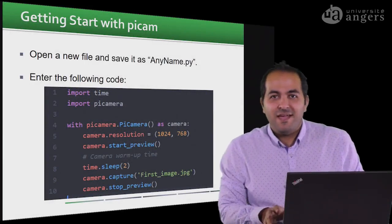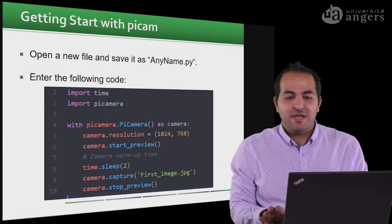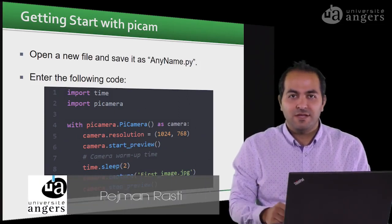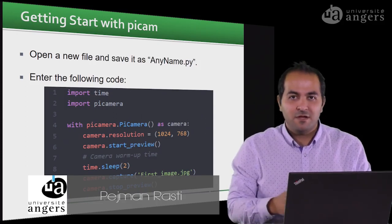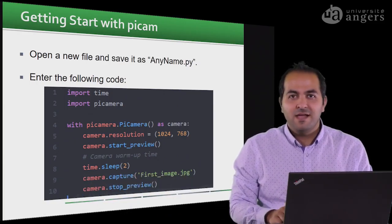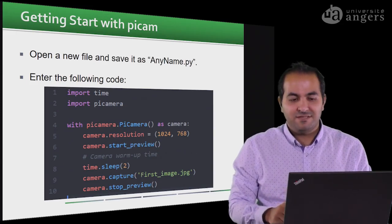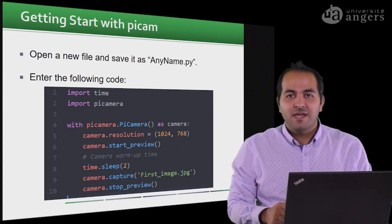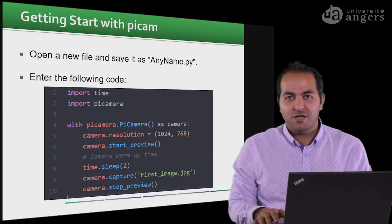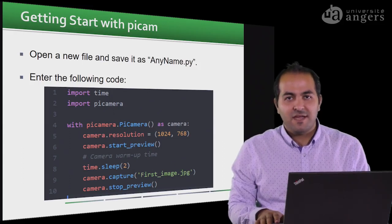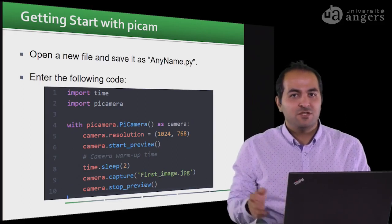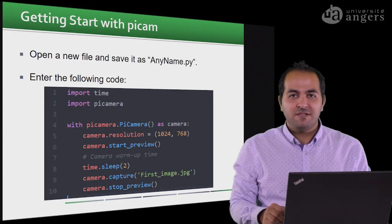Welcome back to the course. In the previous video we saw how we can make our Raspberry Pi with a camera ready for image capturing. We assembled the Raspberry Pi, enabled the camera module and camera port, plus the SSH port — we will see why we did that in the next video. So we are ready for image capturing, and we will start from the beginning.